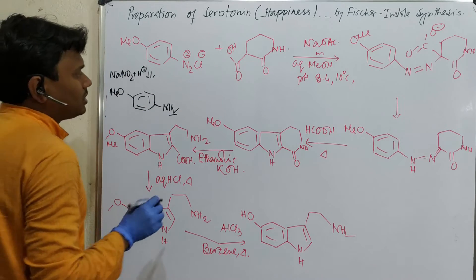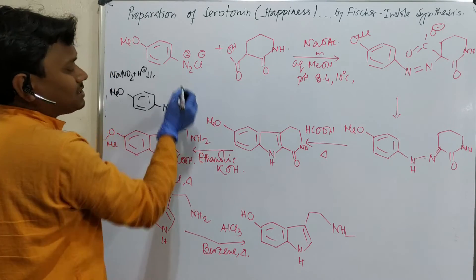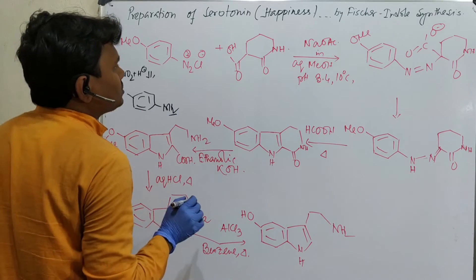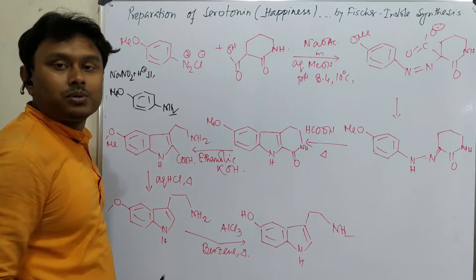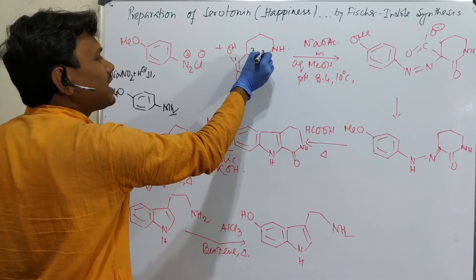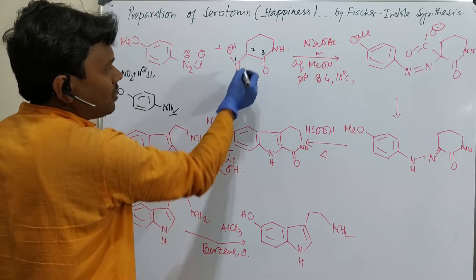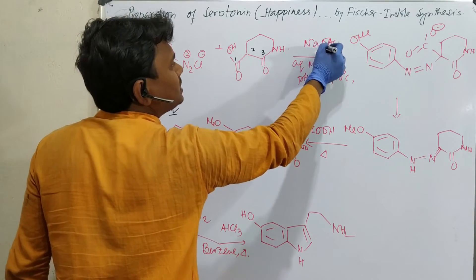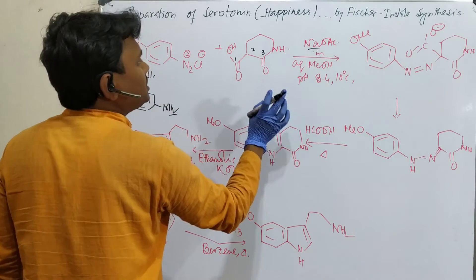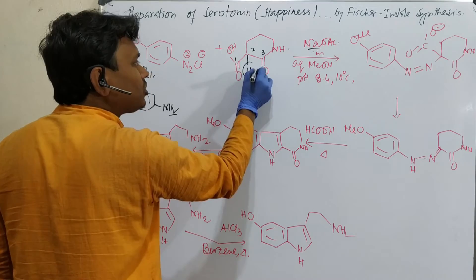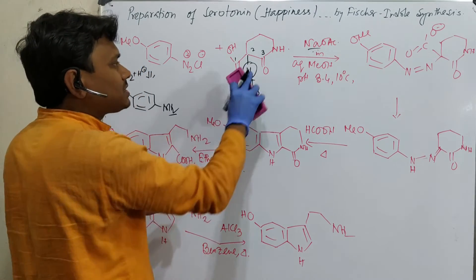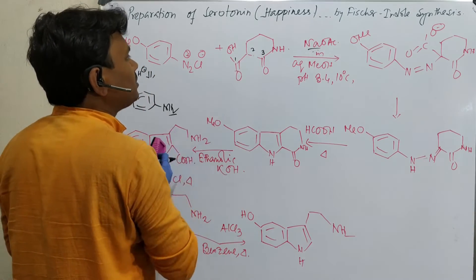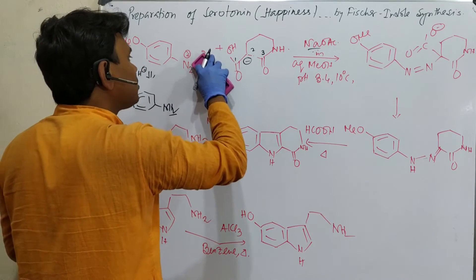This compound is actually an active methylene compound — a 1,3-dicarbonyl. I have in a previous video explained its preparation — it can be prepared by Claisen condensation. Using NaOAc in methanol, which is a basic medium, this proton from the active methylene compound could be abstracted by the base, resulting in a carbanion. And the diazonium salt attacks this carbanion.